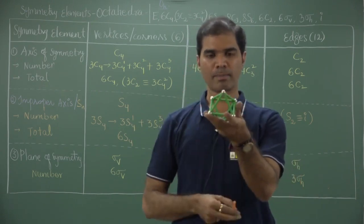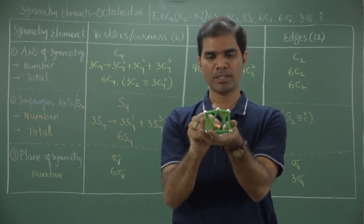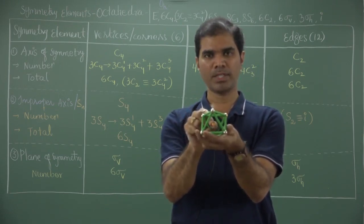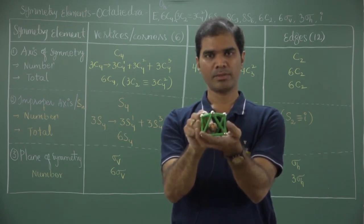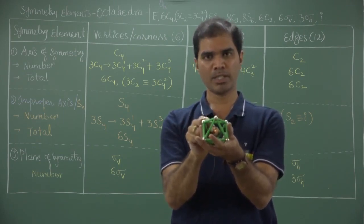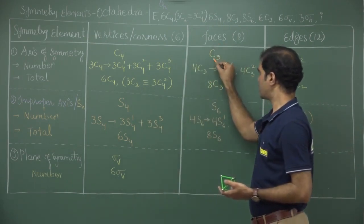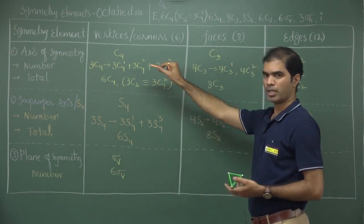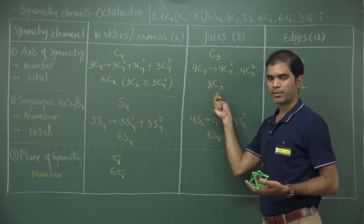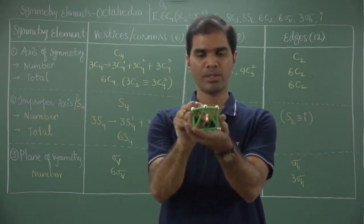Now let us come to the triangular faces. For each triangular face, the opposite is another staggered triangular face, and from each pair of triangular faces, a C3 axis can be passed — a 120-degree rotation gives an equivalent configuration. Since there are 8 triangular faces in 4 pairs, 4 C3 axes are possible. Each C3 generates C3¹ and C3², giving altogether 8 C3 elements. Collinear to each C3 is an S6.